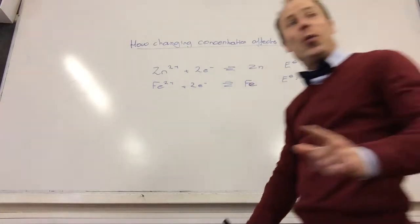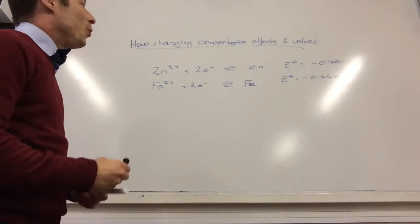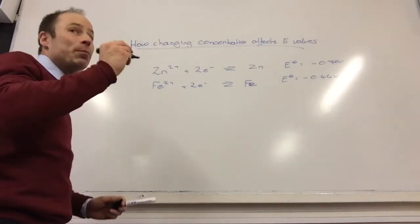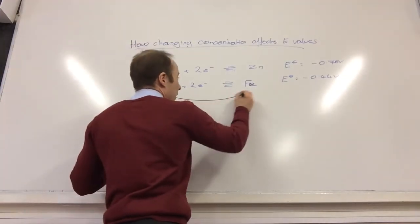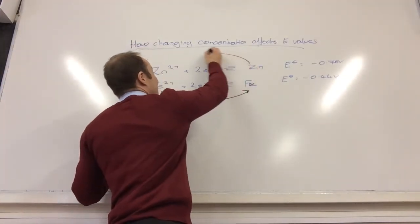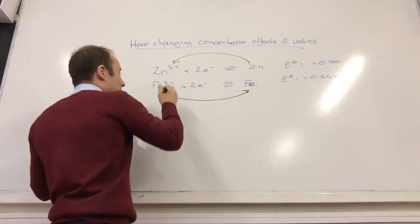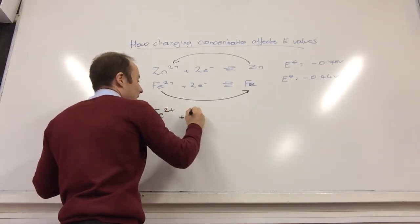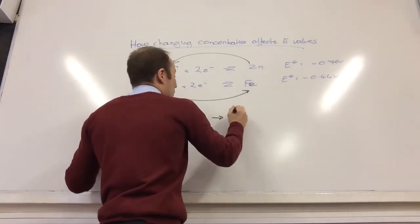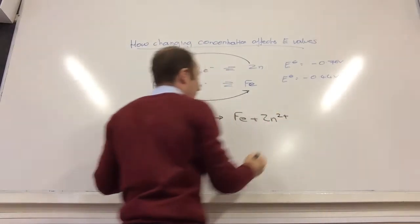So if we go back to what we were doing last lesson, let's predict what reaction will occur. Which one is the most positive? The Fe minus. Yeah, that one's going to go that way, which means this one has to go that way. Okay, so the overall equation that we would get would be Fe2+ plus zinc goes to Fe plus Zn2+.